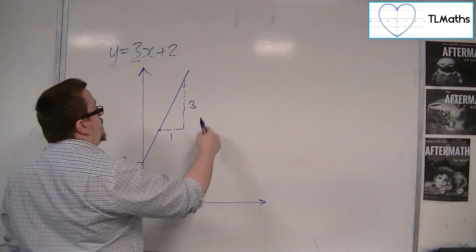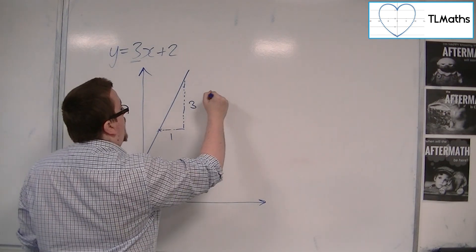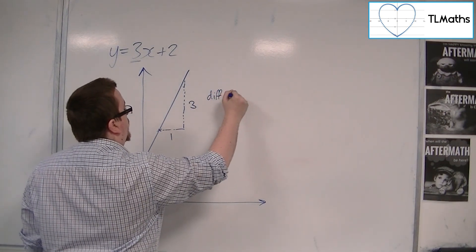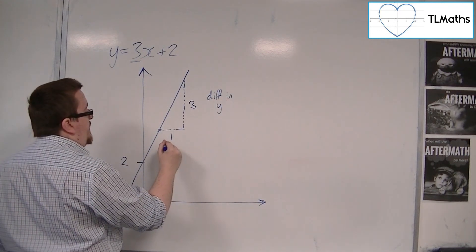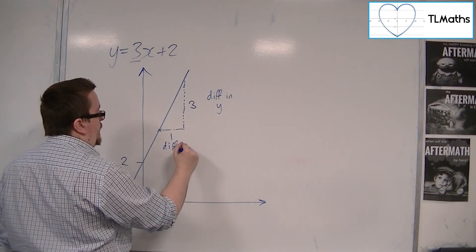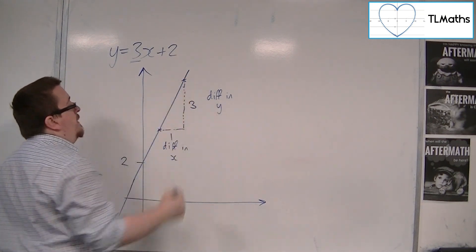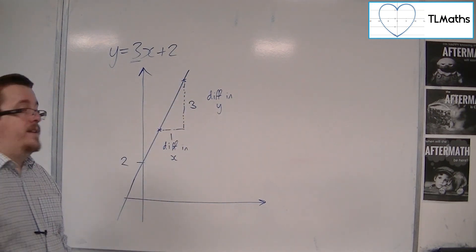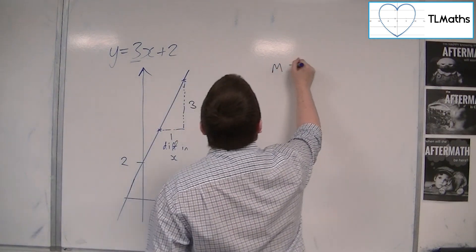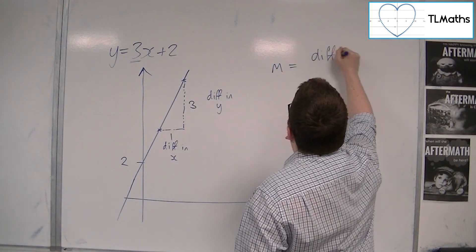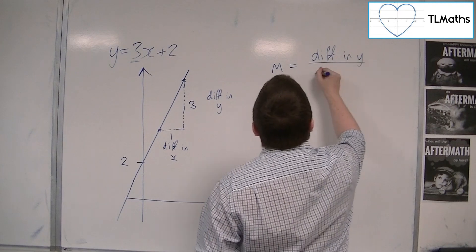And it can be found by finding the difference in the y-coordinates and divide it by the difference in the x-coordinates. So if you know the coordinates of those two points, then you can calculate the gradient by dividing the difference in y by the difference in x.